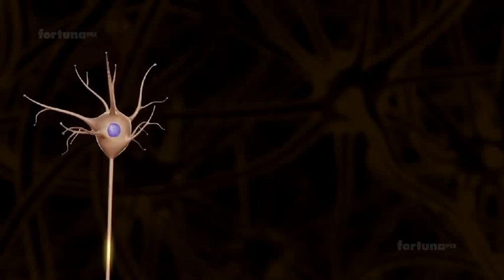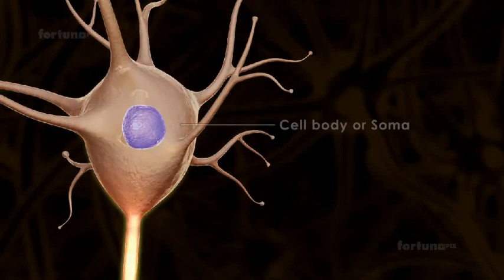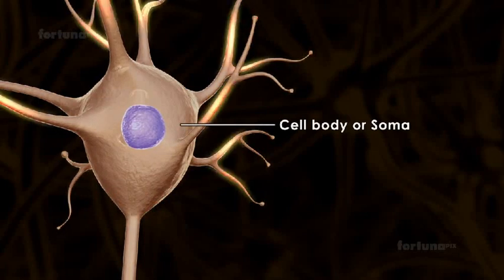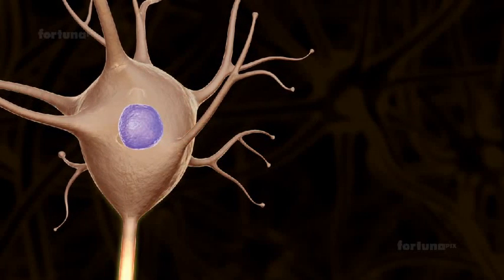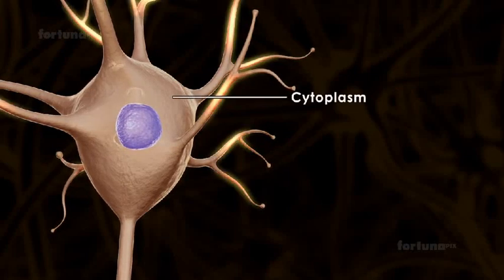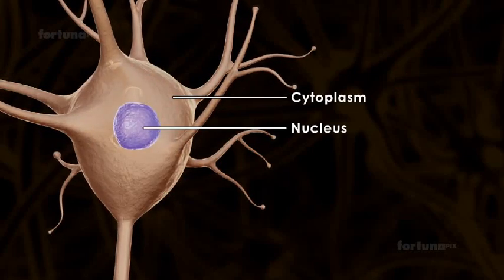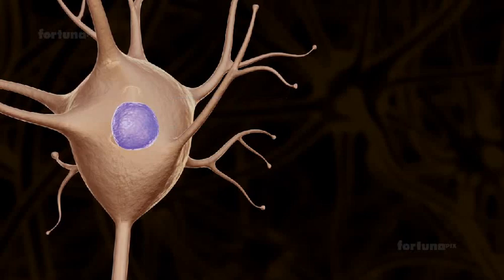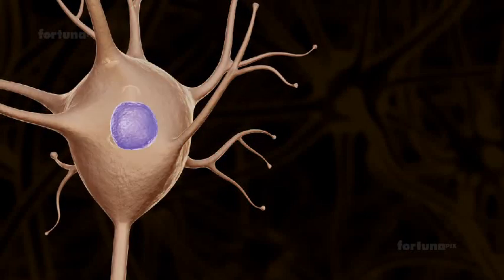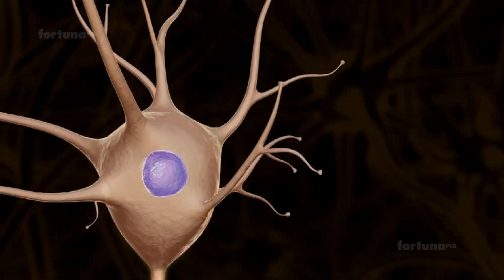The enlarged part of the neuron is the cell body, sometimes referred to as the soma. This is where both the cytoplasm and the nucleus can be found, and the metabolic activity will occur here.